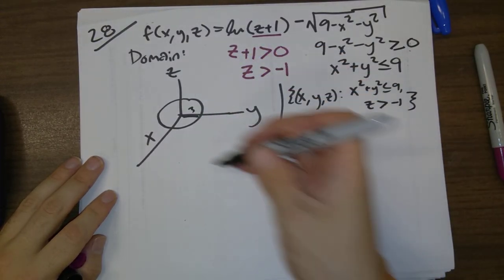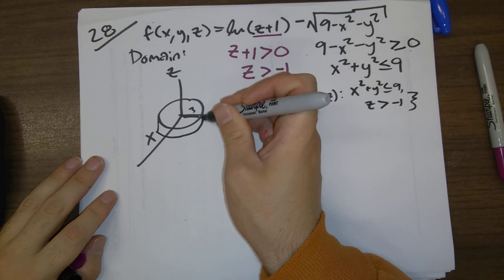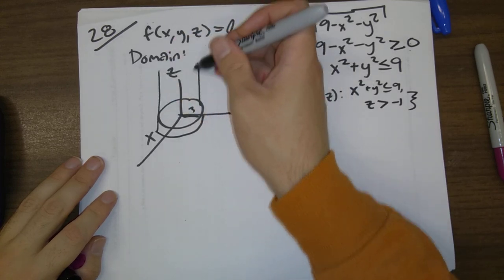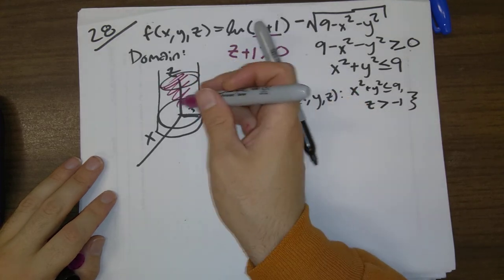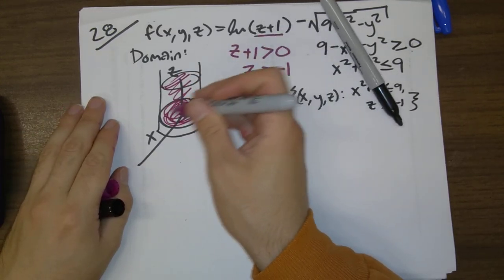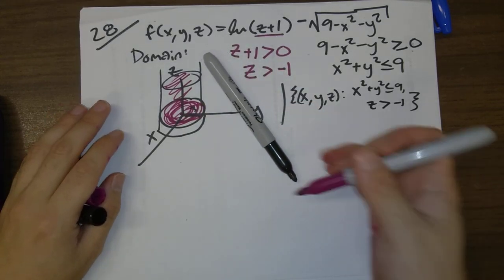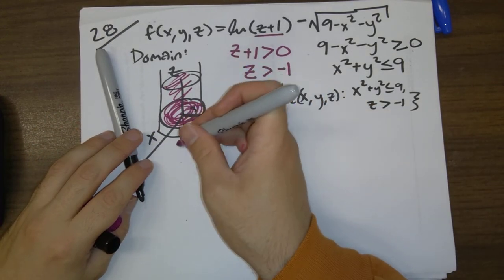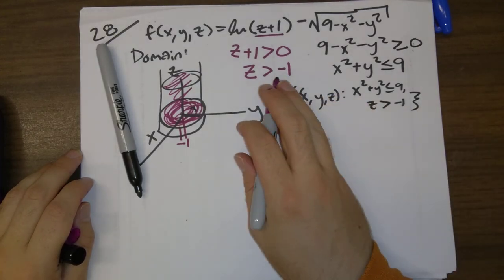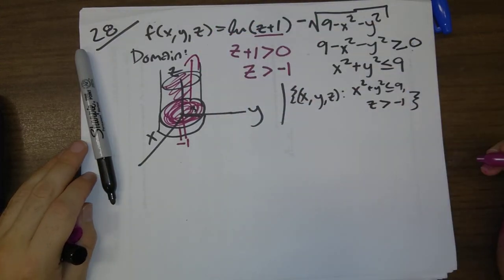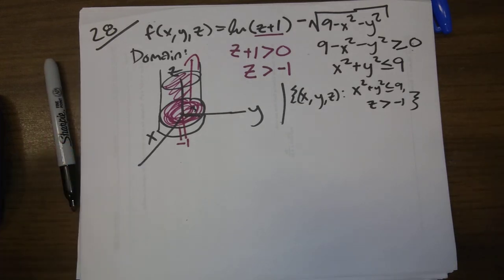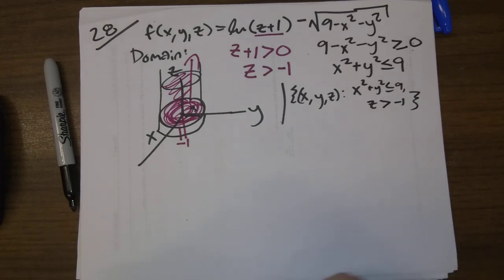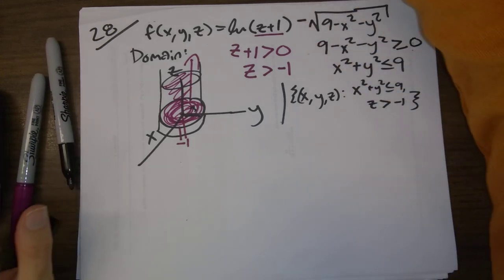So we basically have a half-infinite filled-in cylinder. Take this filled-in circle of radius 3, go down to z equals minus 1, and then go all the way up to infinity — some kind of half-infinite solid cylinder. That's what the domain of this function looks like. Okay, that's problem 28.